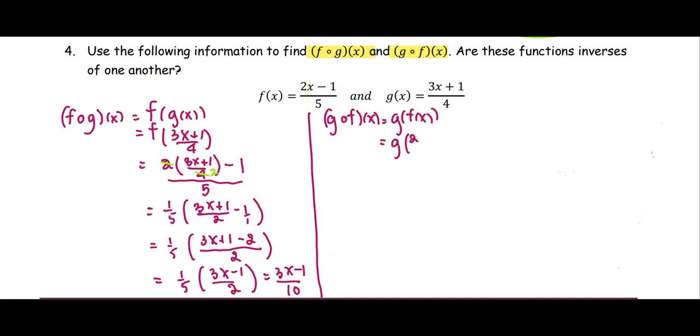Replace f of x with the term 2x minus 1 divided by 5. The input of the function g will be multiplied by 3 plus 1, and all divided by 4. I'm going to rewrite this as 1 over 4 multiplied by 3 times 2x minus 1 over 5, plus 1.